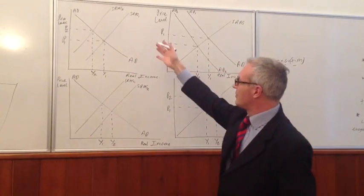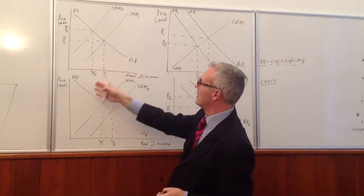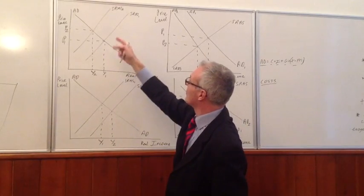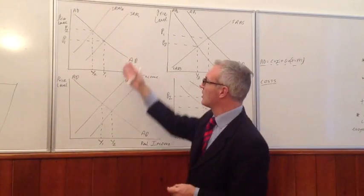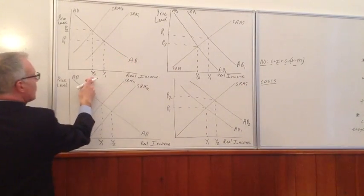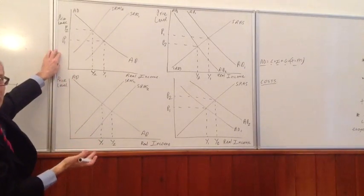Should we start at the top here? At the top here, we have a rightward shift in short-run aggregate supply. Sorry, that can't be. A leftward shift in short-run aggregate supply. That is a negative supply-side shock. Look what happens. It leads to a fall in output and an increase in the price level. In fact, cost-push inflation.